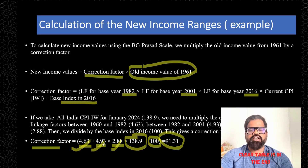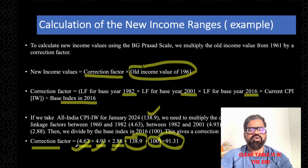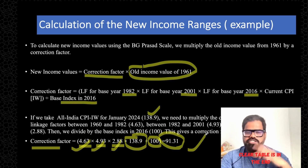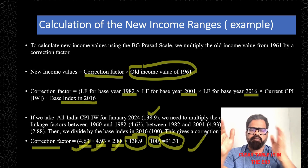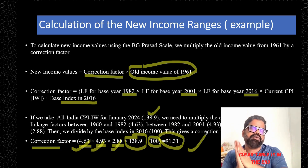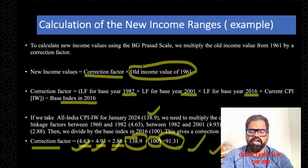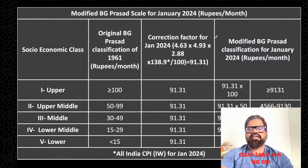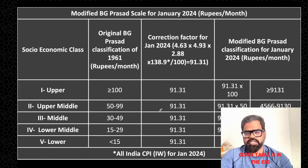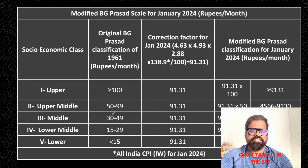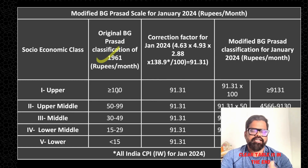This correction factor value keeps changing based on the CPI for Industrial Worker for the month you want to calculate. This is the way you update the per capita income ranges. Since I have taken this example, to use the modified BJ Prasad classification in the field — for family surveys or research — you need the updated table. It is easy to remember the 1961 values: 100, 50–99, 30–49, 15–29, and less than 15.